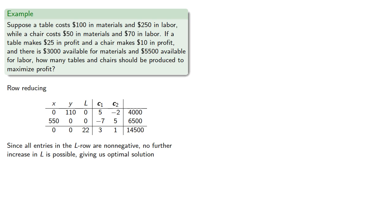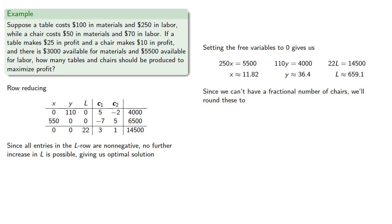Setting the free variables to 0 gives us. Since we can't have a fractional number of chairs, we'll round these two. So the company should make 12 tables and 36 chairs. Or should it?